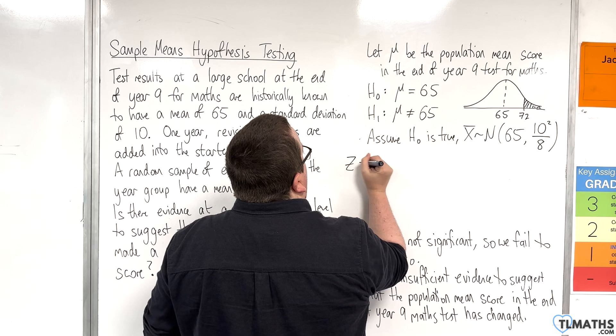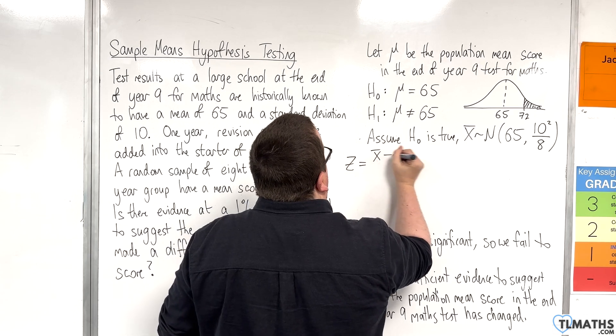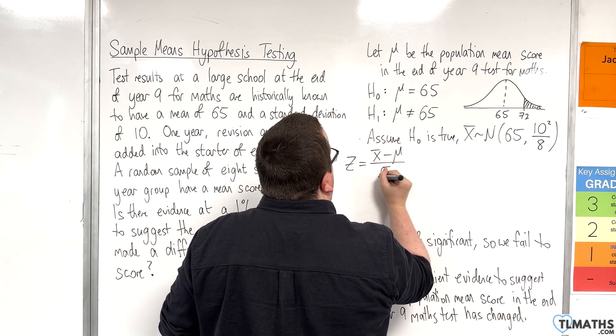Test statistic first. Z is equal to X bar, take away the mean mu, over the standard error.